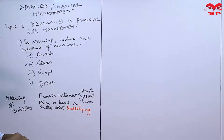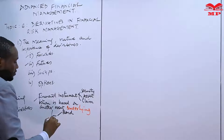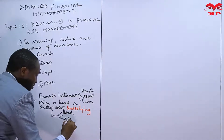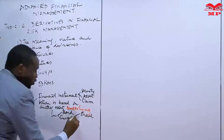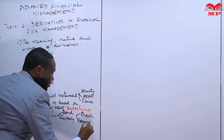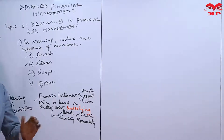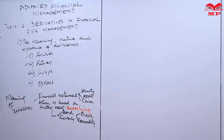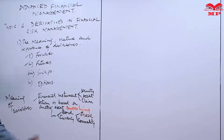So what could this underlying be? The underlying could be a bond, a currency, or a share, or it could be a commodity. Commodities involve things like agricultural produce — wheat, corn, or barley — or precious metals like gold, or oil, for example.